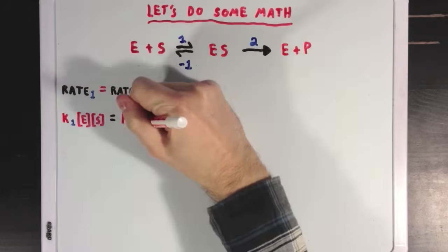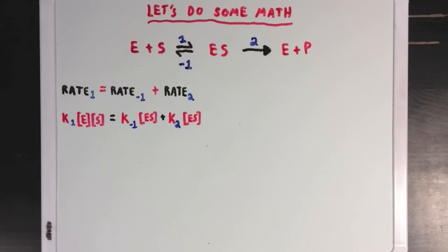Now, the first thing I'll do is swap out those rate values for their rate constants times the reactants for those reactions. So, rate 1 will be equal to K1 times E times S, and so on for the other two.